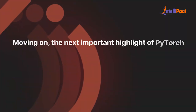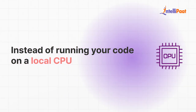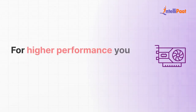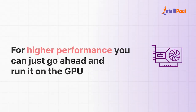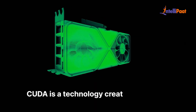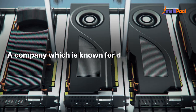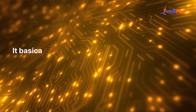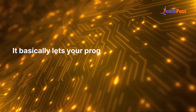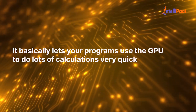The next important highlight of PyTorch is parallel computing. Instead of running your code on a local CPU, for higher performance you can run it on the GPU with the help of CUDA support. CUDA is a technology created by NVIDIA, a company known for developing GPUs, and it lets your program use the GPU to do lots of calculations very quickly.